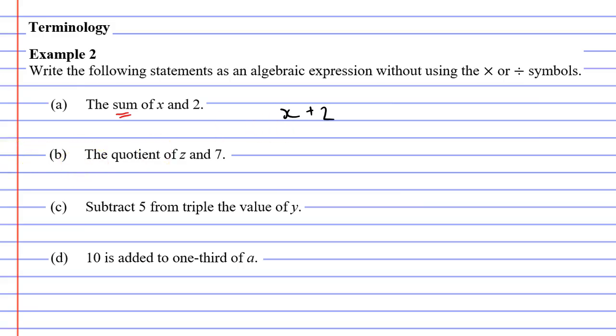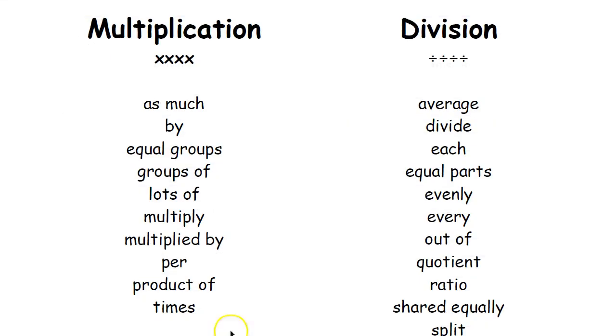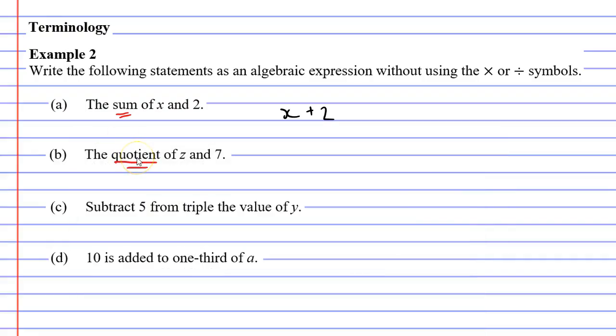Now moving on to question B. We have the word quotient. So we need to check what this word means. Looking at my PDF under division I can see the word quotient. So this just means that we are dividing. We're going z divide 7. We'll write that down. So this is going to be z divided by 7. Remembering that we don't like to use the division symbols so we'll rewrite it as a fraction z over 7.